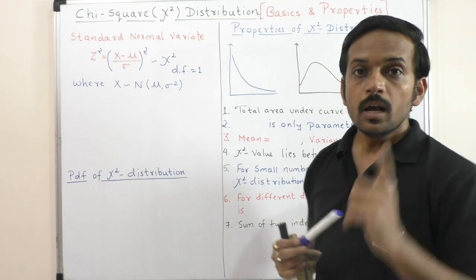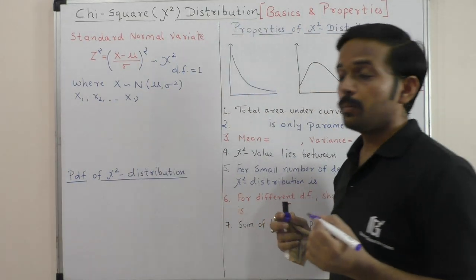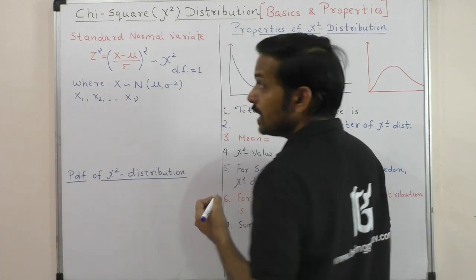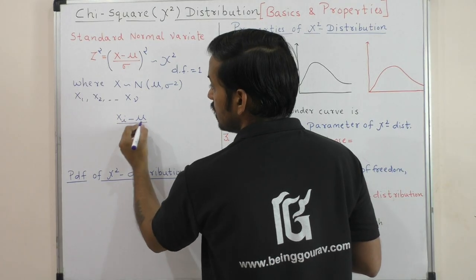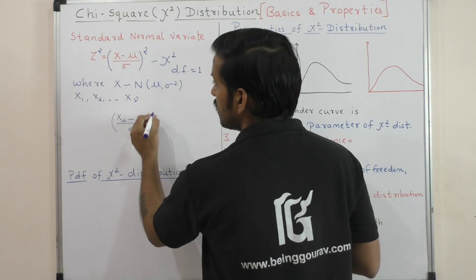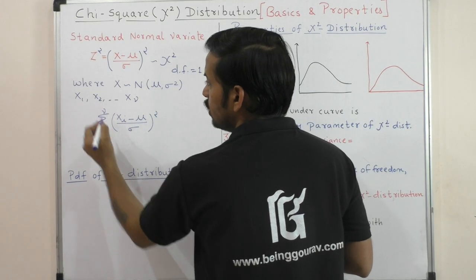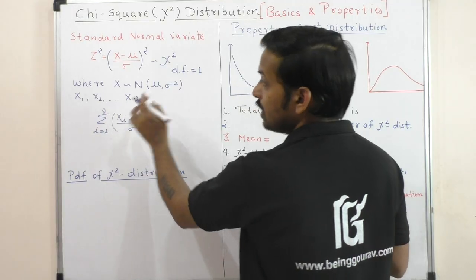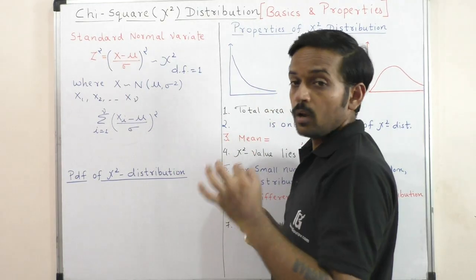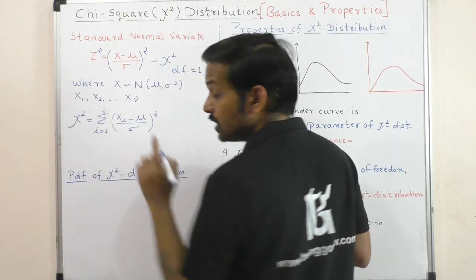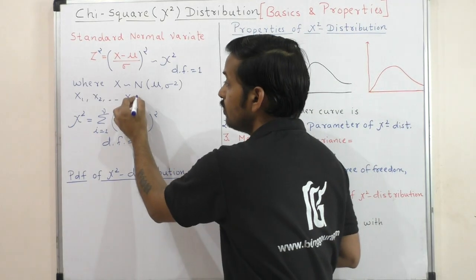Now, X is the same random variable. Suppose I have multiple random variables: X1, X2, up to X-nu. So the chi-square distribution formula is the summation from i=1 to n (or nu) of (Xi minus mu upon sigma) whole square. We square the standard normal variates and sum them, giving chi-square distribution with degree of freedom equal to nu (or n).